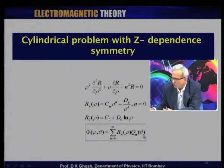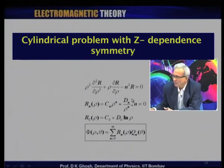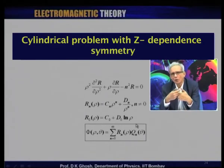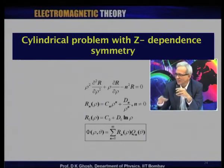The expression for phi is R_n(rho) times Q_n(theta), where R_n is a power series in rho and 1 over rho, and Q_n is a linear combination of cos n theta and sin n theta.